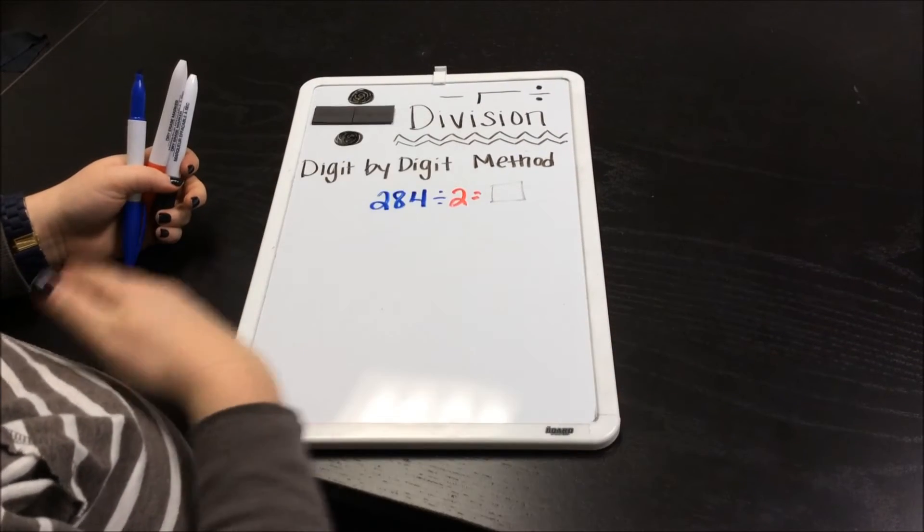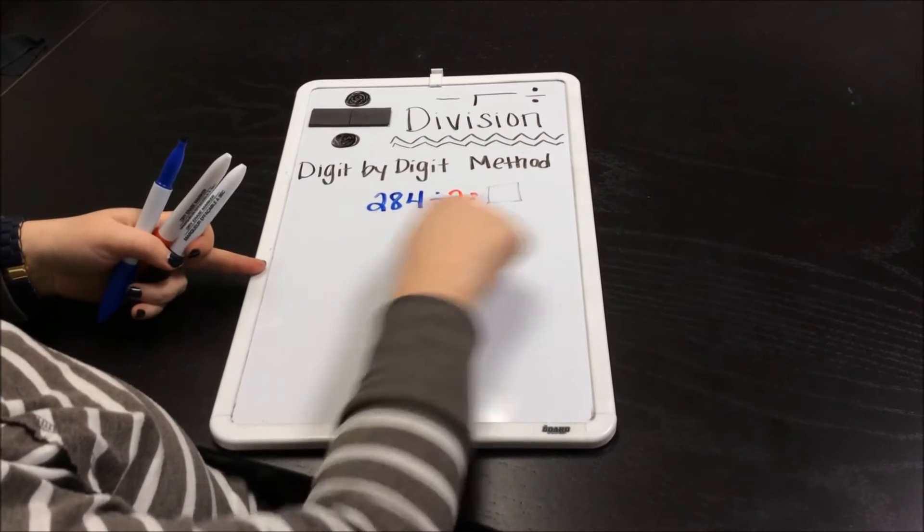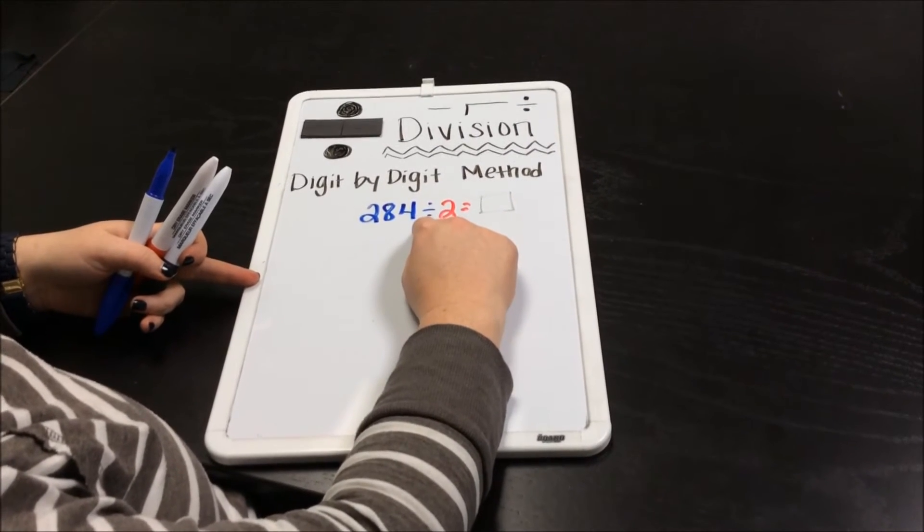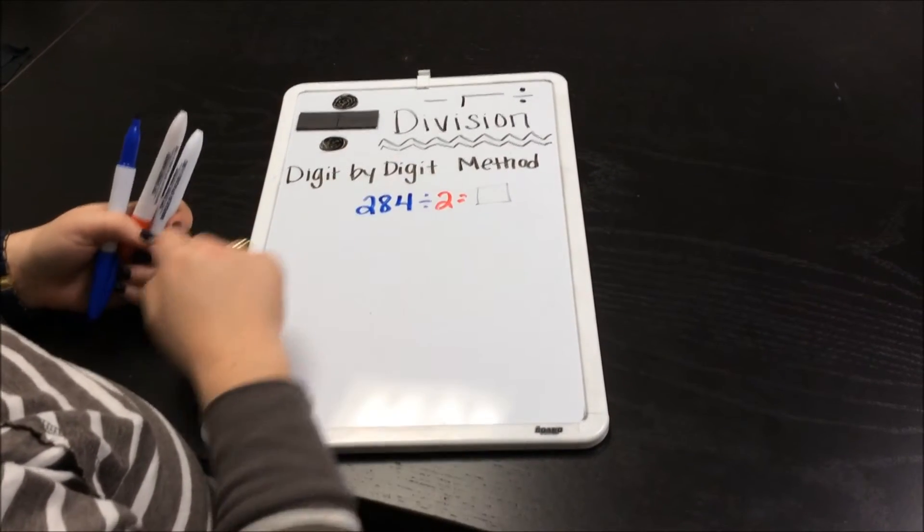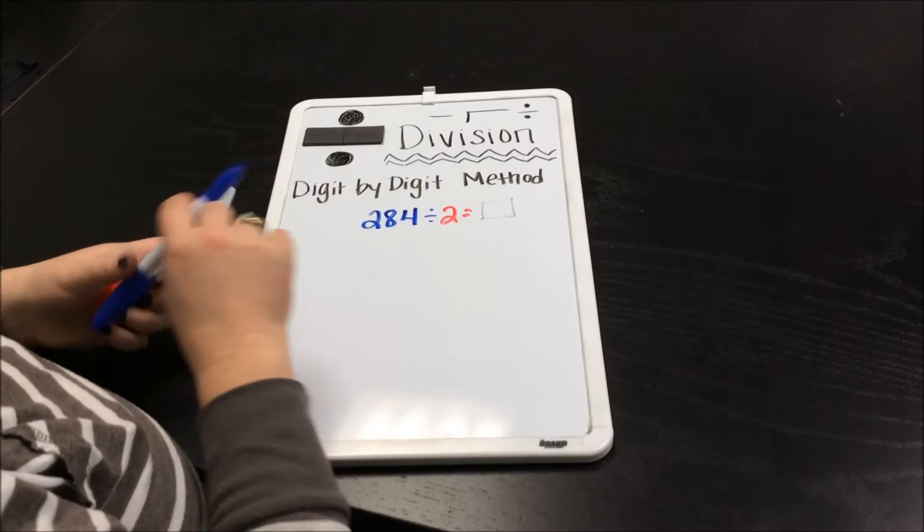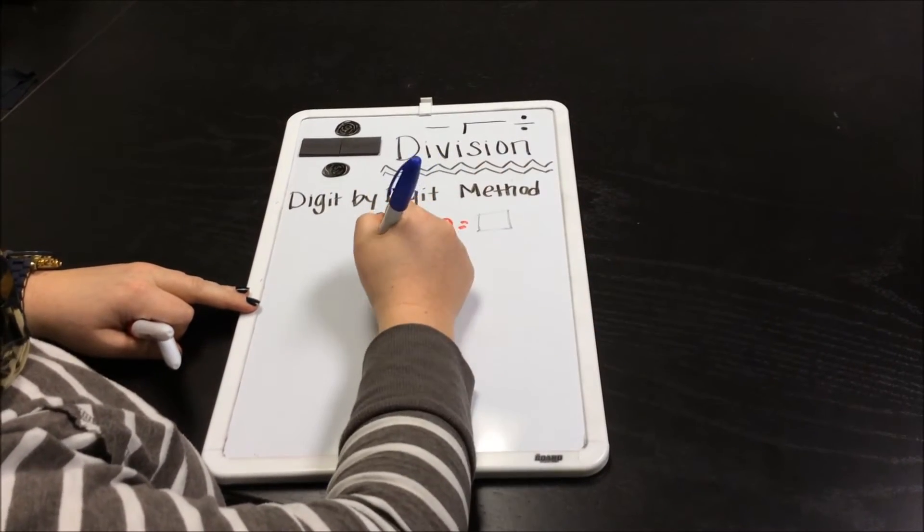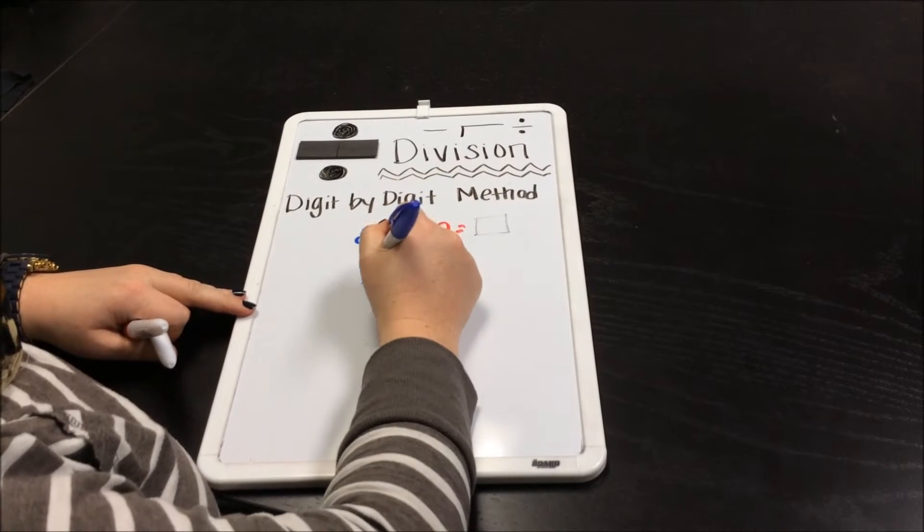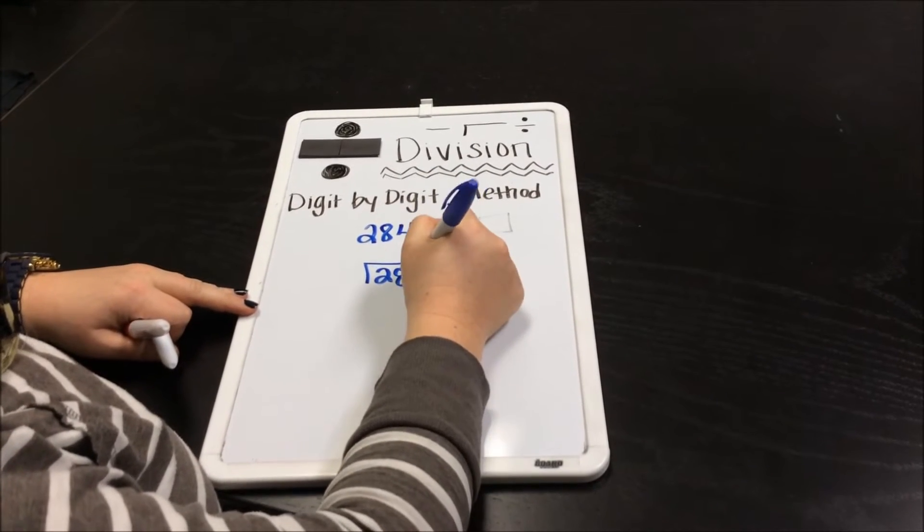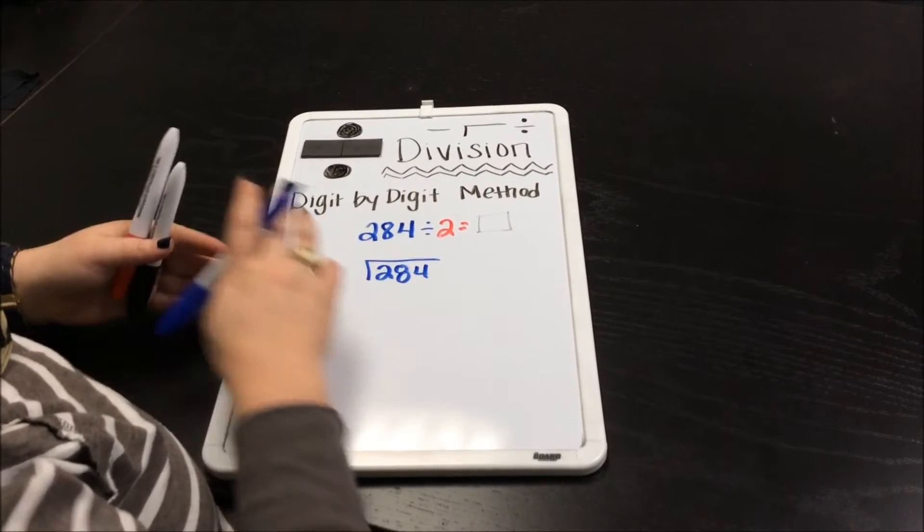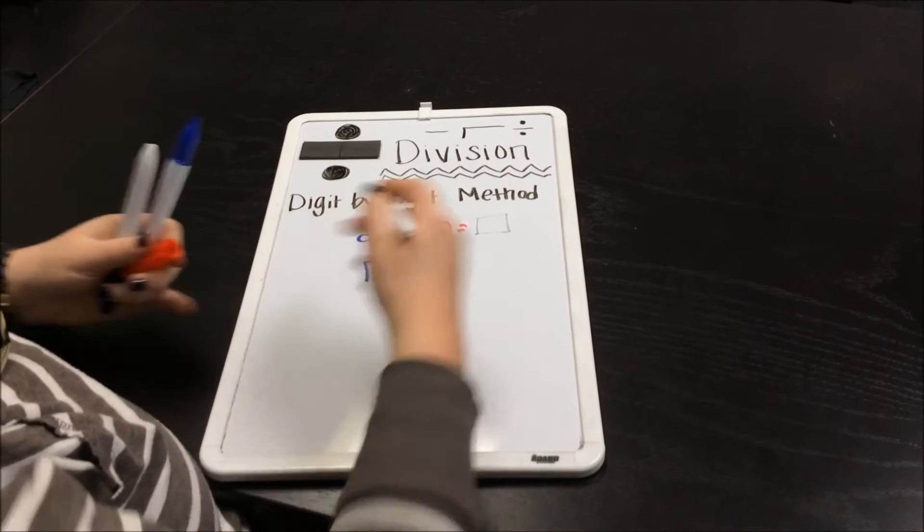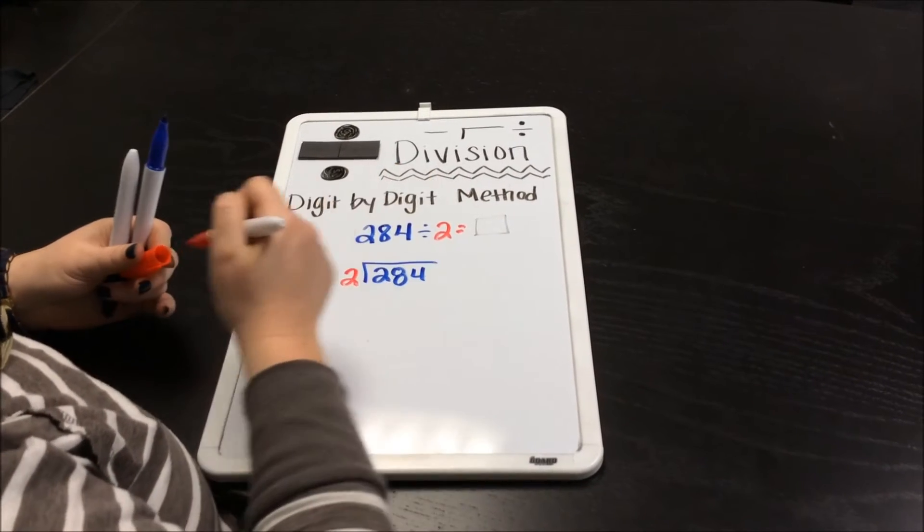In the past videos, I've been writing out my division sentence using the division symbol, but with the digit by digit method, you do use the other division symbol that looks—I like to call it the house, it looks kind of like a house. The big number, the dividend, goes inside the house, and our smaller number, the divisor, goes on the outside of the house.